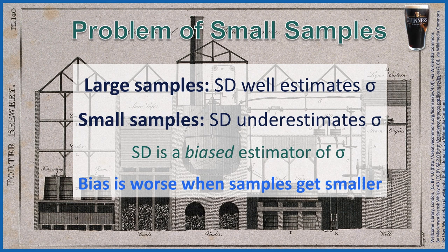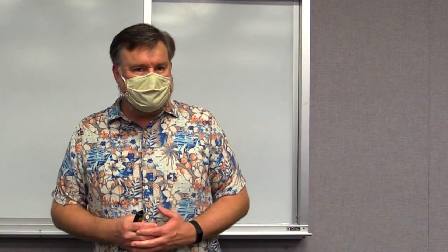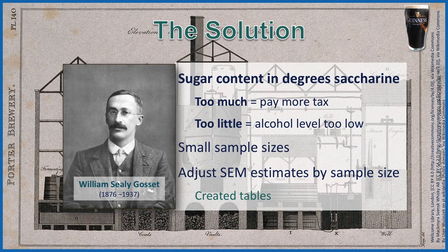This bias gets even worse when the sample sizes are smaller. The solution to this small sample size problem came to us through a master brewer and statistician named William Seeley Gossett, who worked for the Guinness Brewing Company.